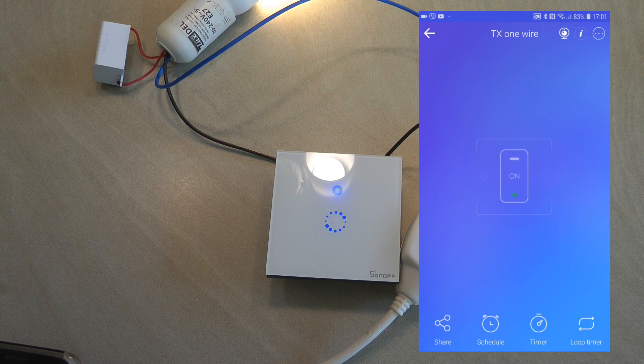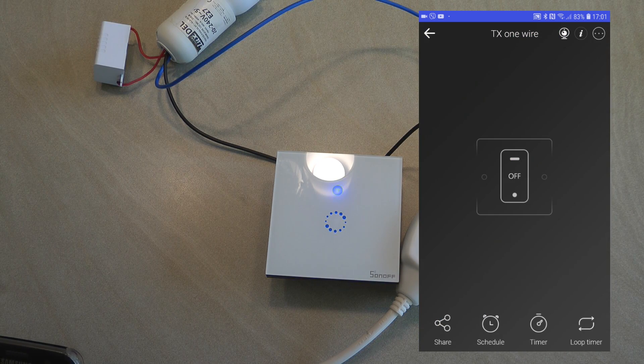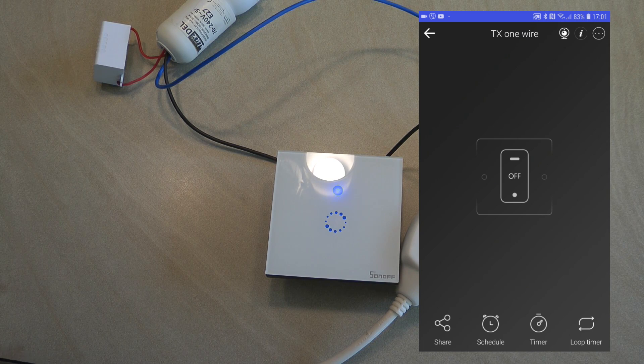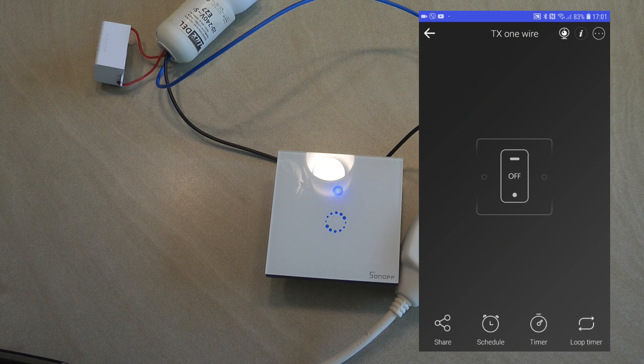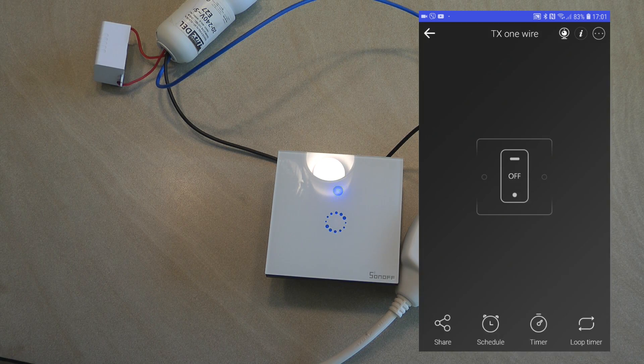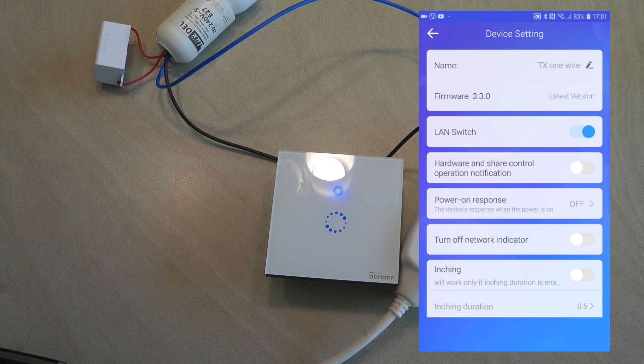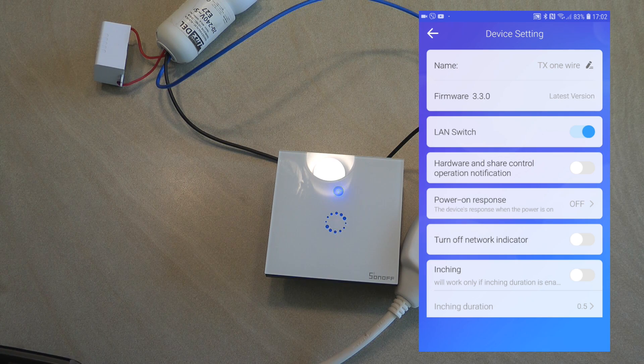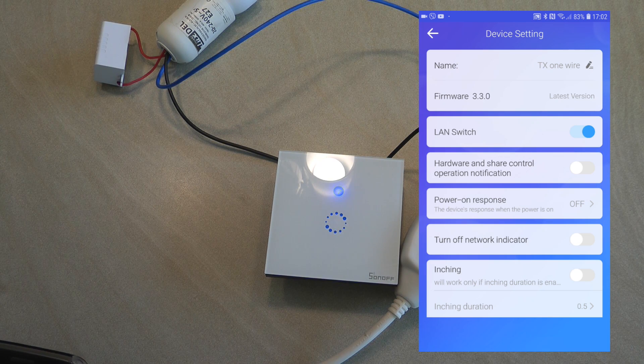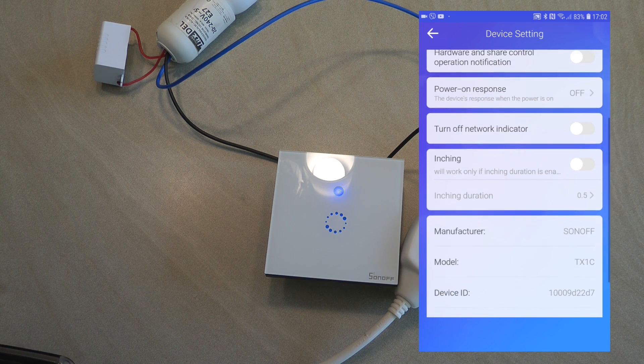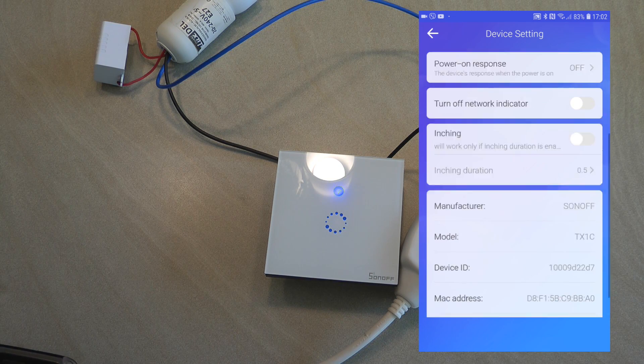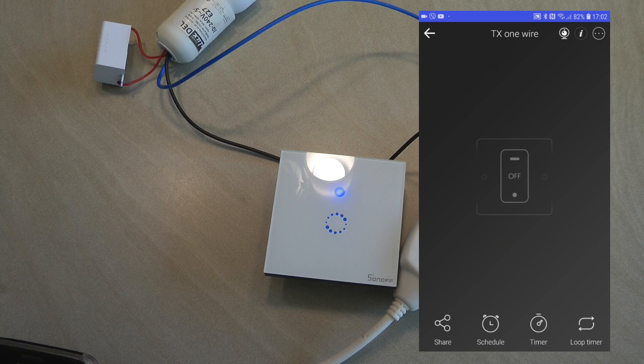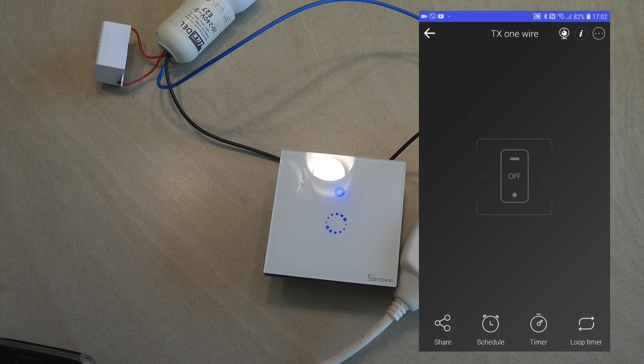Once you go into details again it behaves exactly the same as any one gang switch. You have the usual functions on the button so like share, schedule, timer and loop timer. I really don't want to cover it because I have told this on every other video already. And once you go into the settings then again you see the same functions. As you can see the firmware is 3.3.0 so it works on the latest firmware what is available for all the other units and it also supports the inching mode.